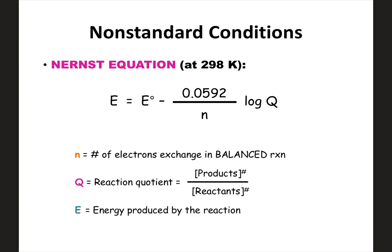They could ask us to use concentrations to get Q, use N, and use E naught to calculate the new E. Or we could be given the measured E and asked to calculate one of the concentrations, which involves solving for Q and going further. Q is your concentration of products to the power over concentration of reactants to the power, just as you'd expect using equilibrium.